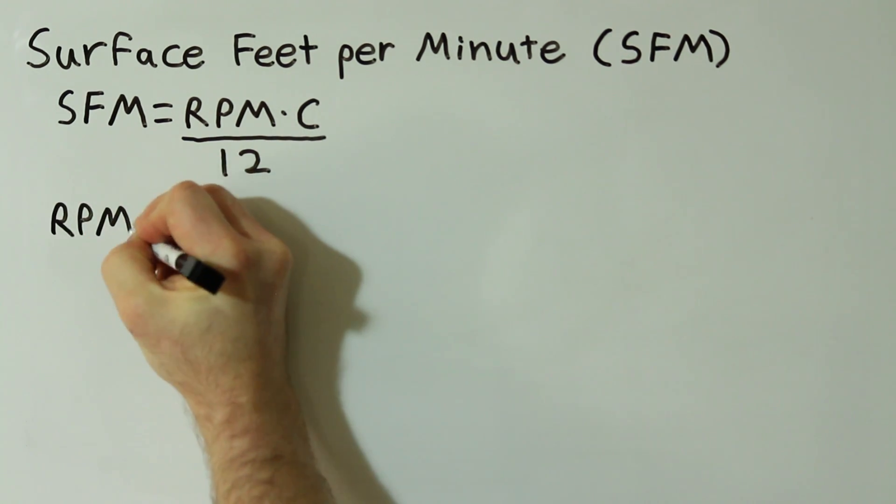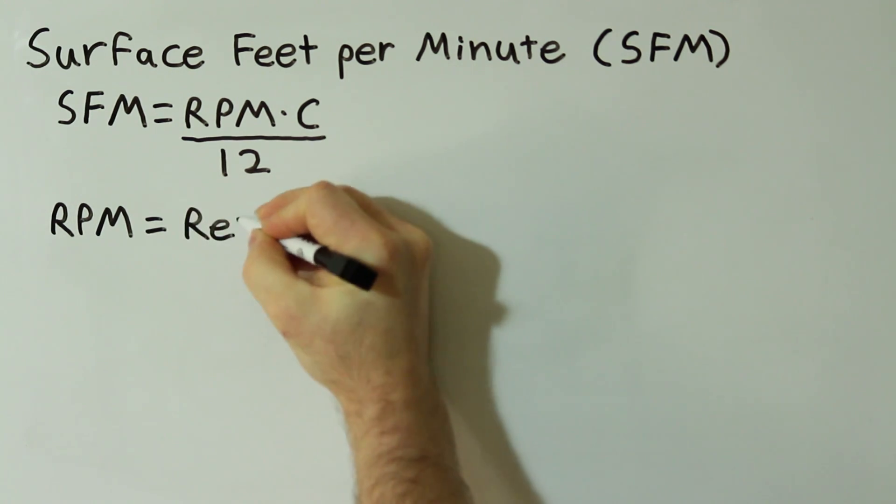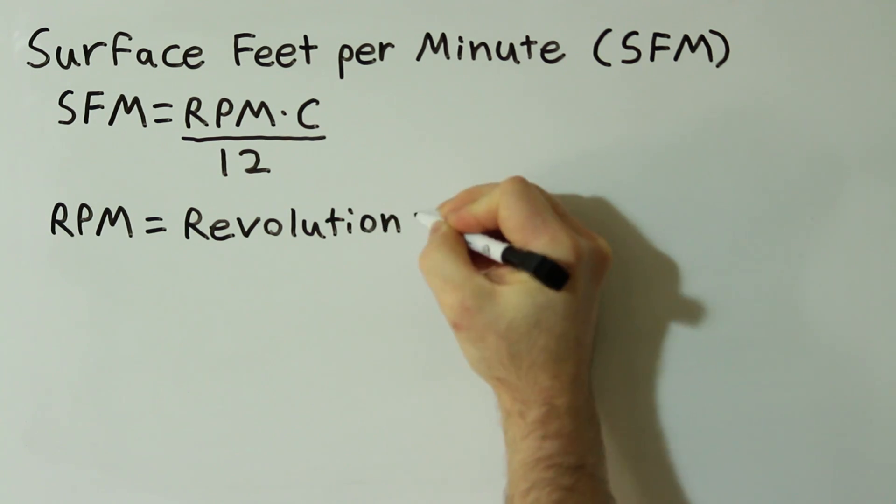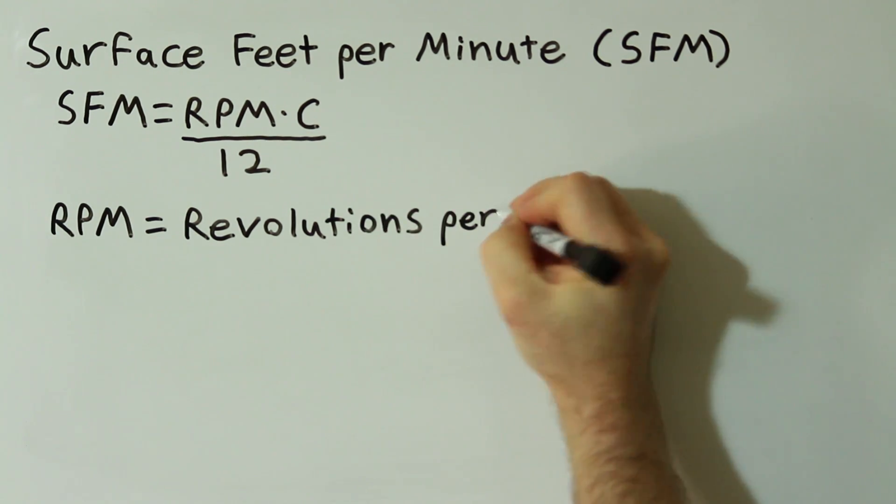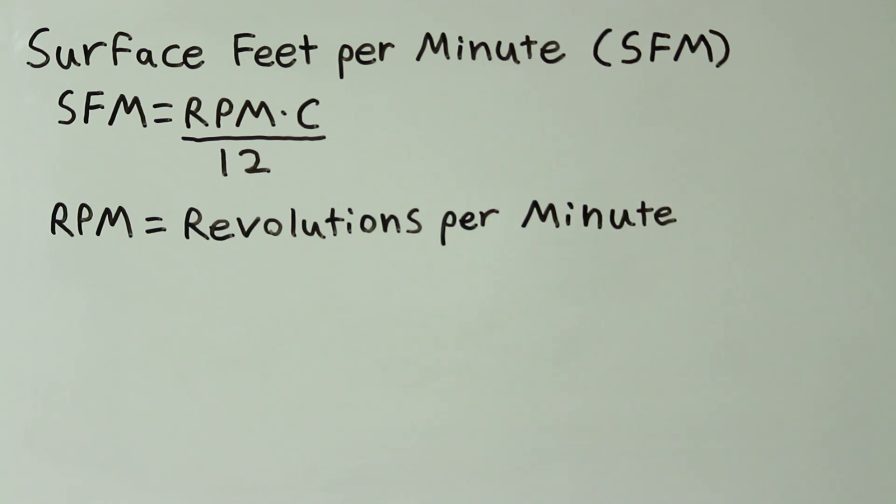Now, let's take a look at the inputs used in this equation. RPM stands for revolutions per minute and is how many revolutions the material in a lathe or the cutting tool in a mill rotate per minute and is also called the spindle speed.